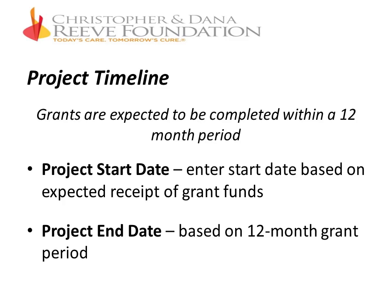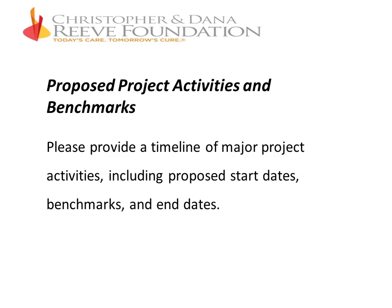For project timeline, grants are expected to be completed within a 12-month period. Enter the start date based on the expected receipt of the grant funds and the project end date based on the 12-month grant period. For proposed project activities and benchmarks, please provide a timeline of major project activities, including proposed start dates, benchmarks, and end dates — providing detail on what exactly you're doing and when those parts of the project will start and be completed.